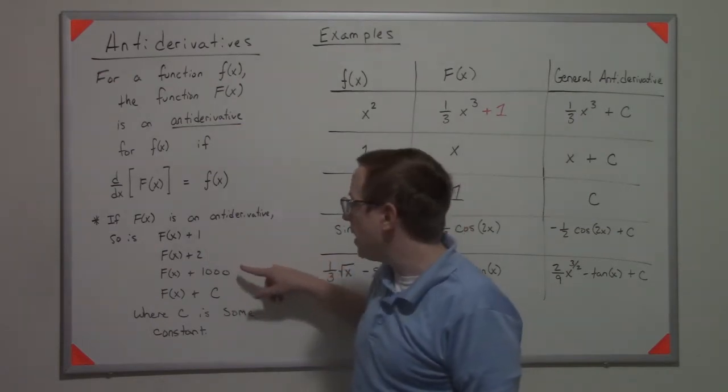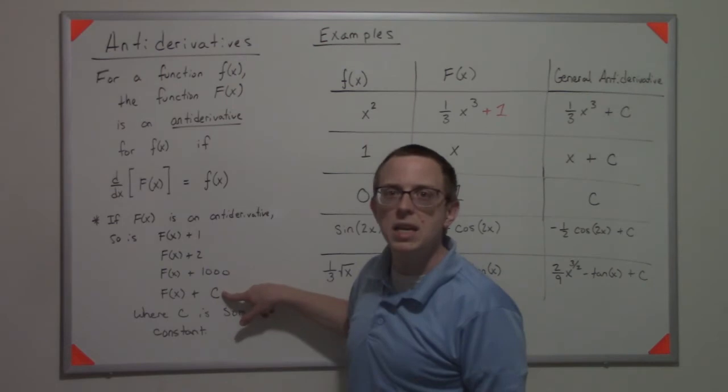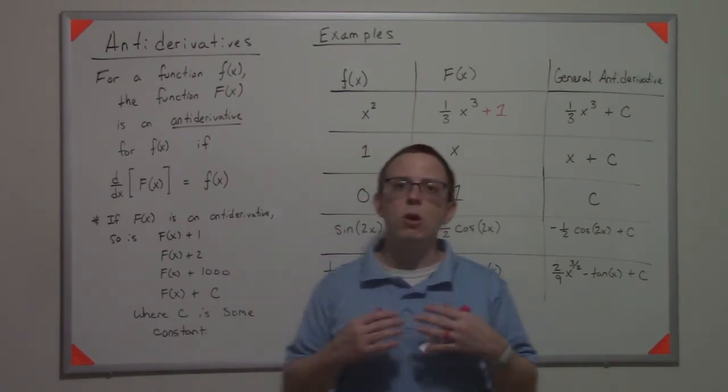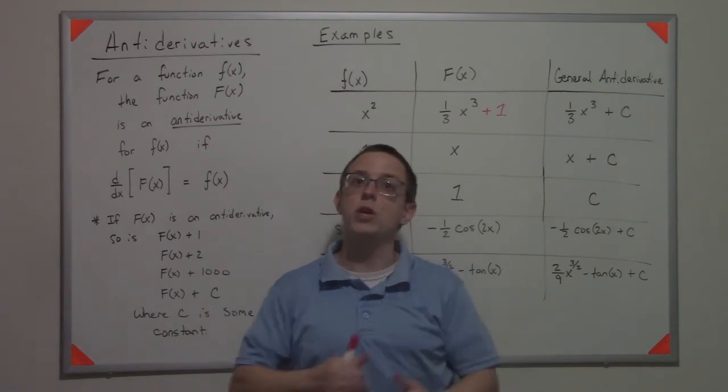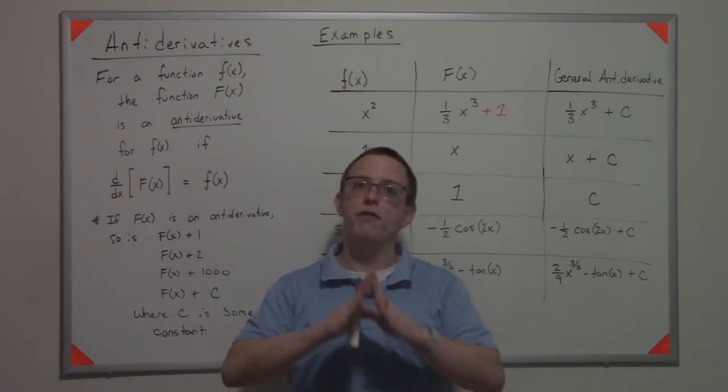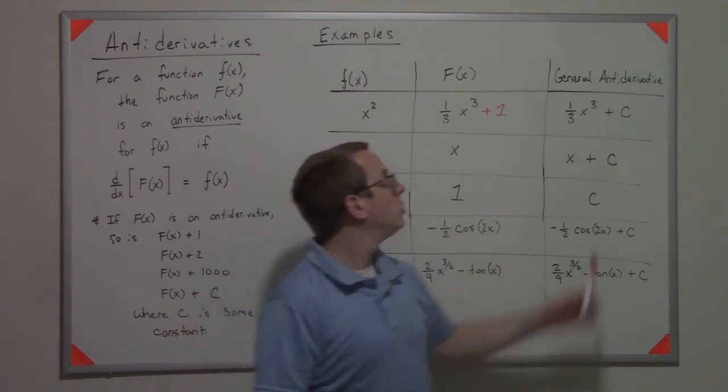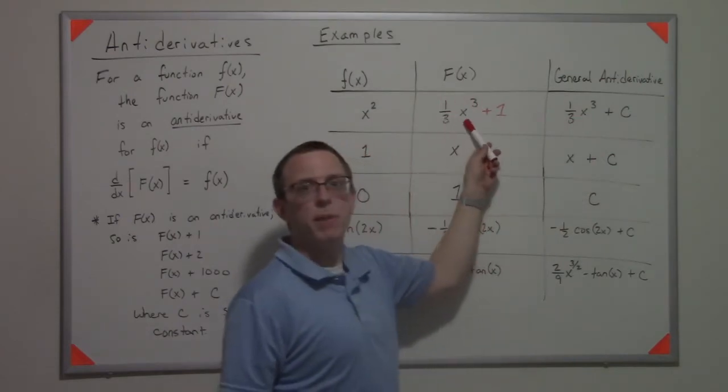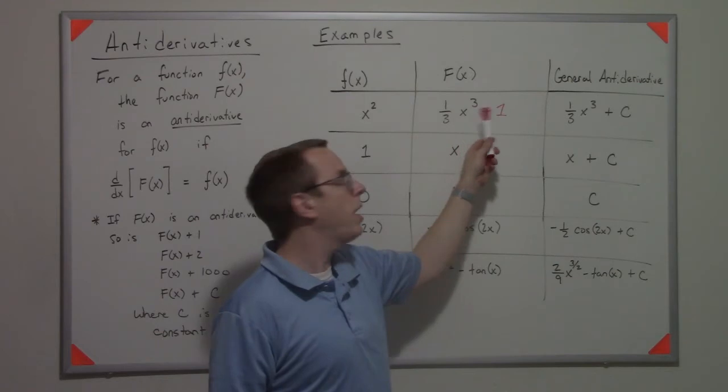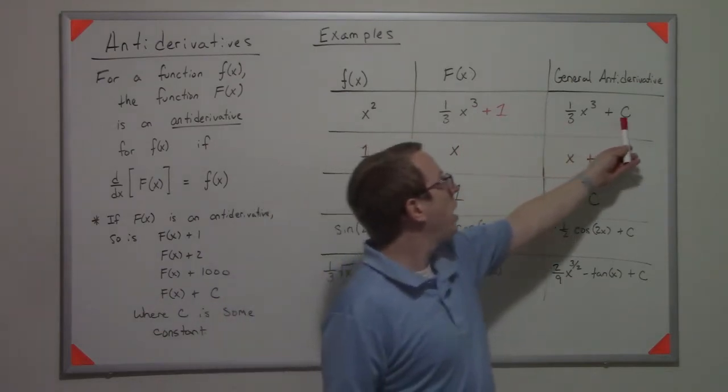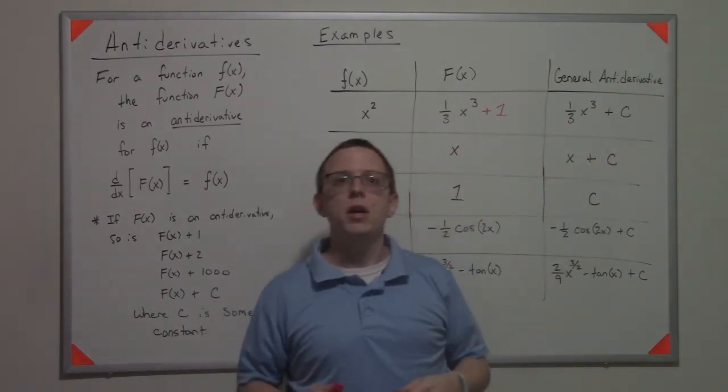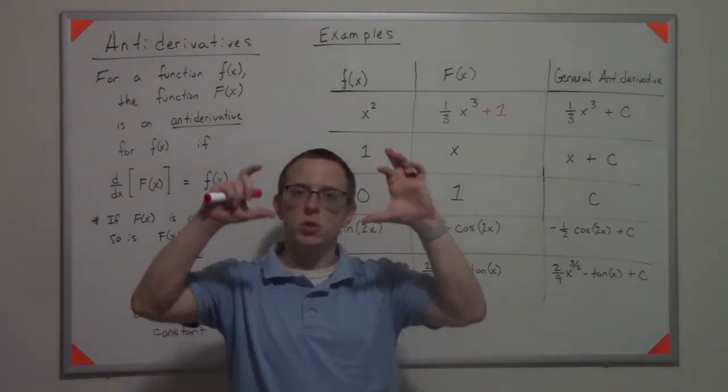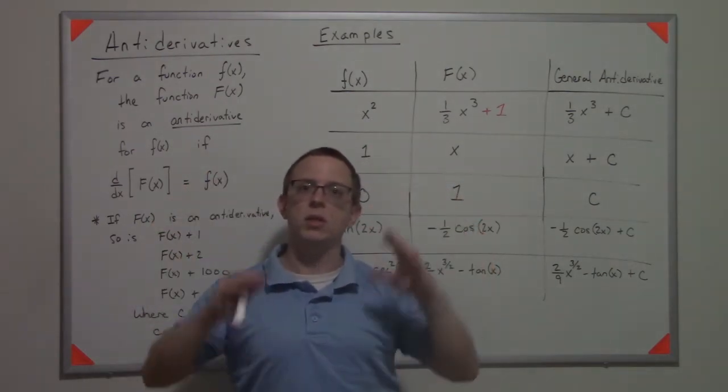That would be the same if I did 1, if I did 2, if I did a thousand—in fact, any constant is considered an antiderivative. When we talk about the idea of an antiderivative, we usually talk about a family of functions. We take the simple antiderivative, the one that makes the most logical sense, where this is zero, and we put a +C on it.